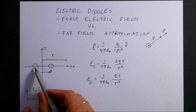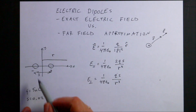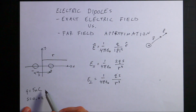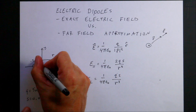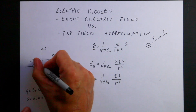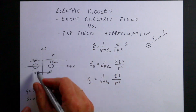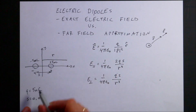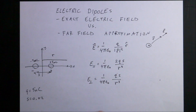Here's my dipole — a negative charge and a positive charge. In this case I'm using five nanocoulombs: negative five nanocoulombs and positive five nanocoulombs. They're separated by some distance S; I picked two centimeters. It doesn't really matter — of course molecules and atoms would be much smaller than that, but we're just working with a dipole.